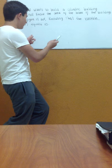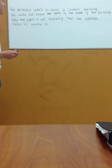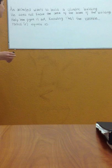Here's a problem, it's a really easy one. It says an architect wants to build a cylindrical building. He does not know the area of the basis of the building. Help him figure it out knowing that the variable radius, or r, equals 10.